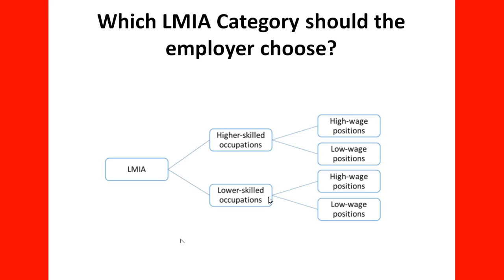LMIA has two main categories: higher-skill occupations and lower-skill occupations. Higher-skill occupations can be further divided into high-wage and low-wage positions, and lower-skill occupations can similarly be high-wage or low-wage positions. The wage level is determined based on the market, provincial information normally sourced through the Job Bank, and position requirements. The skill level depends on the occupation and its requirements. These are the categories that the employer must determine before making an LMIA application.